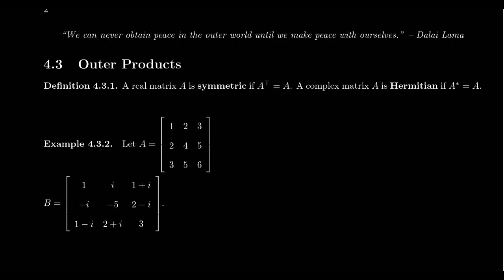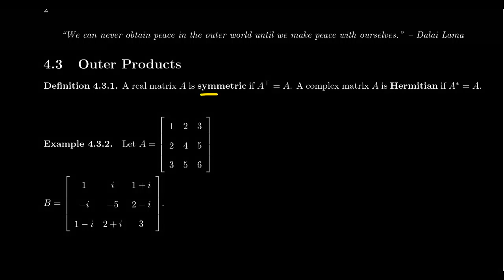What I want to talk about right now is the idea of a symmetric matrix, which is a special type of real matrix, and its complex counterpart called a Hermitian matrix. A real matrix A is called symmetric if the transpose of the matrix is equal to the matrix A itself.